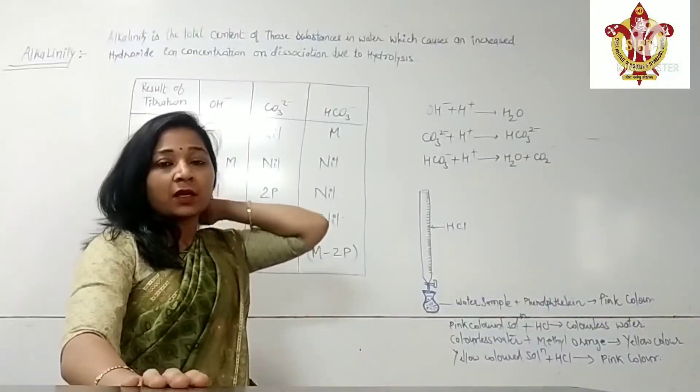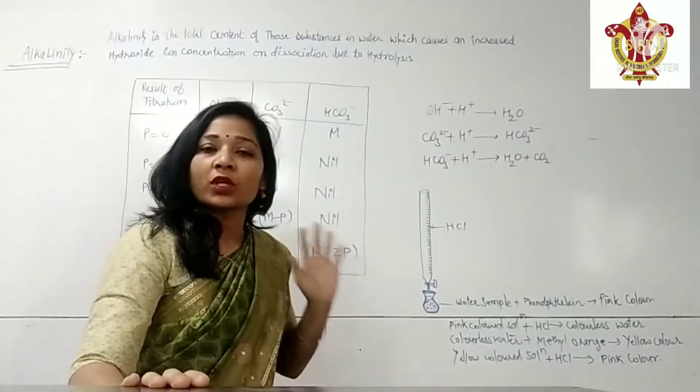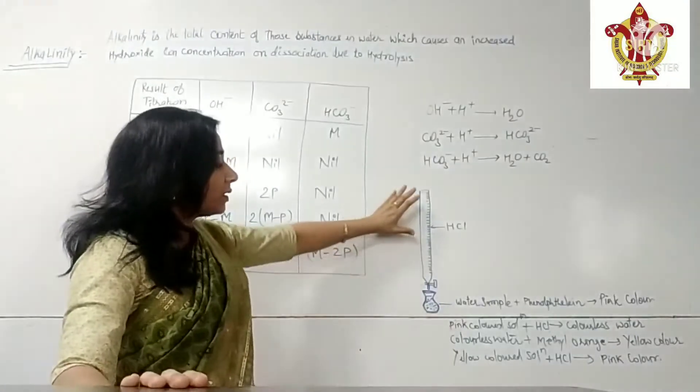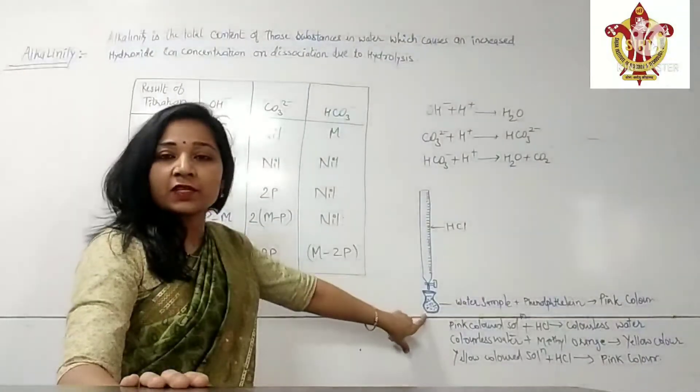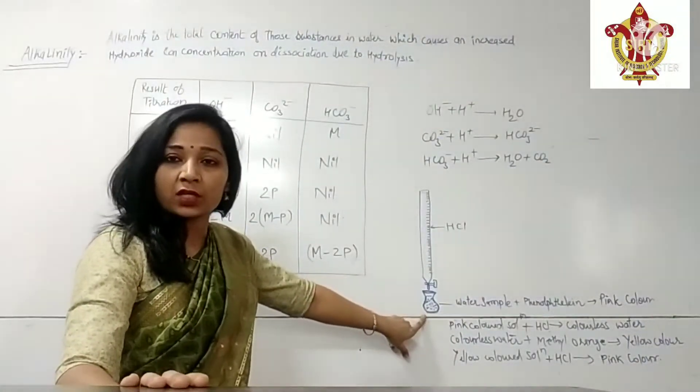We have to find the ions which are present in water sample. Now, burette is filled with acid. In conical flask we take 20 ml of water sample.